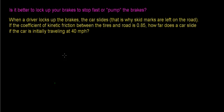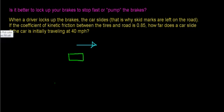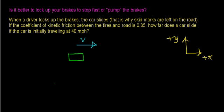Imagine that you have some car initially traveling in the positive x direction. We'll set up a coordinate system where motion in the positive x direction is horizontal and the positive y direction is upward. The velocity vector points in the direction of travel, and the acceleration will be in the opposite direction of the velocity, so the object is going to slow down.